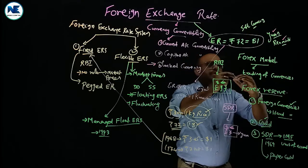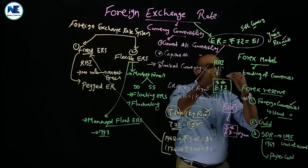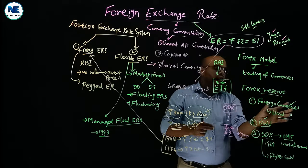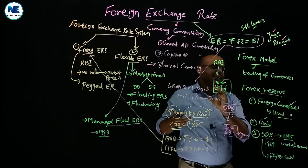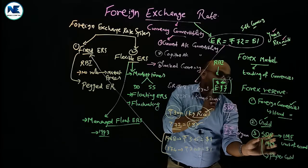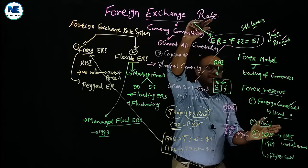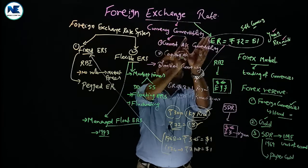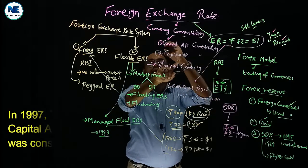Related to this topic, we discussed the foreign exchange market — the place where trading of currencies, that is buying and selling of foreign currencies, takes place. Foreign exchange reserves are also very important. They include three components: foreign currency assets, which are hard currencies managed by RBI; gold stock managed by RBI; and SDR — special drawing rights — managed by the IMF. We also discussed currency convertibility — current account convertibility and capital account convertibility.